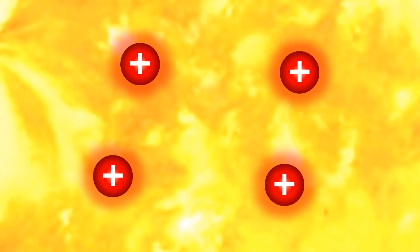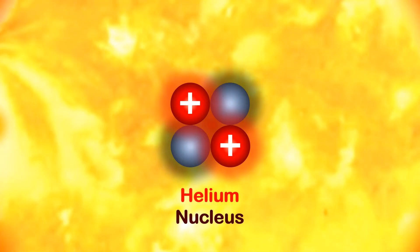Nuclear fusion happens when hydrogen nuclei bond together to make a heavier helium nucleus, releasing huge amounts of energy as light and heat.